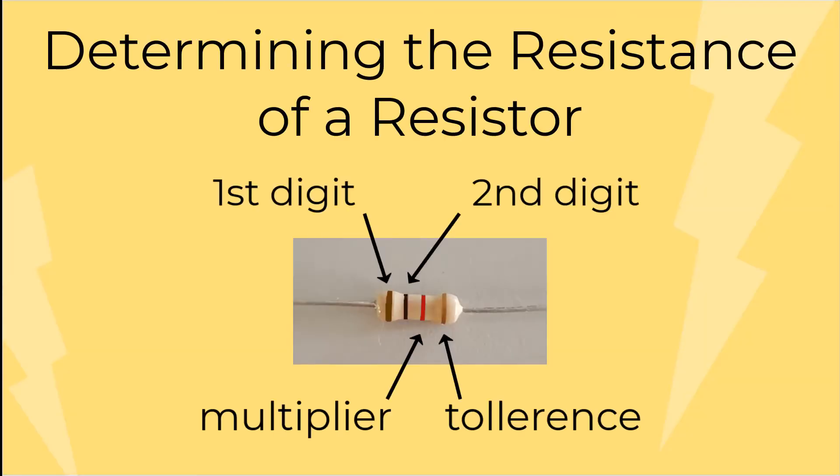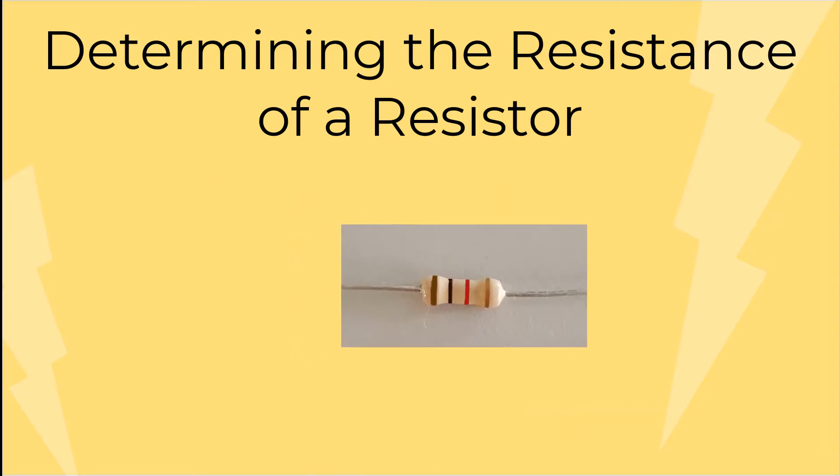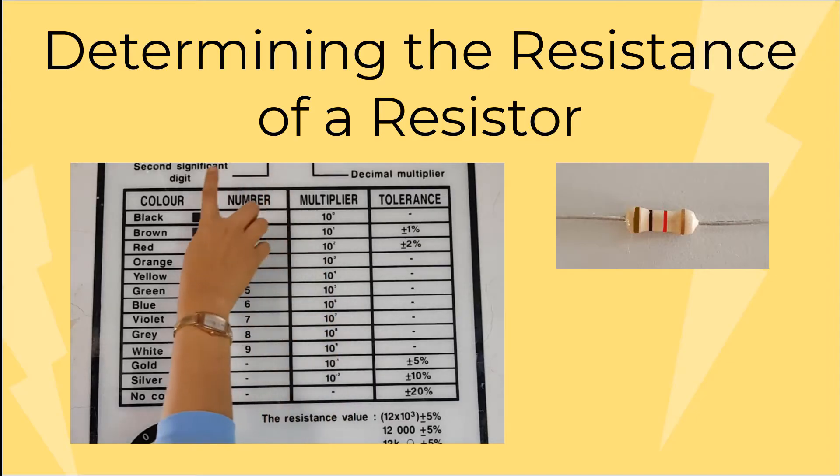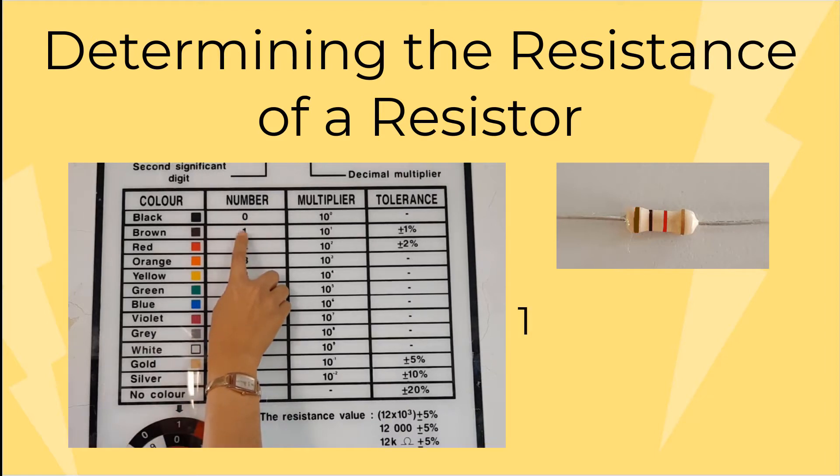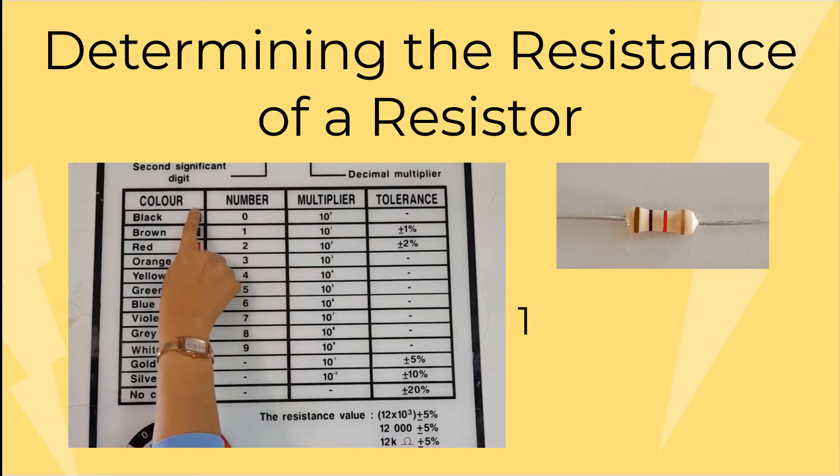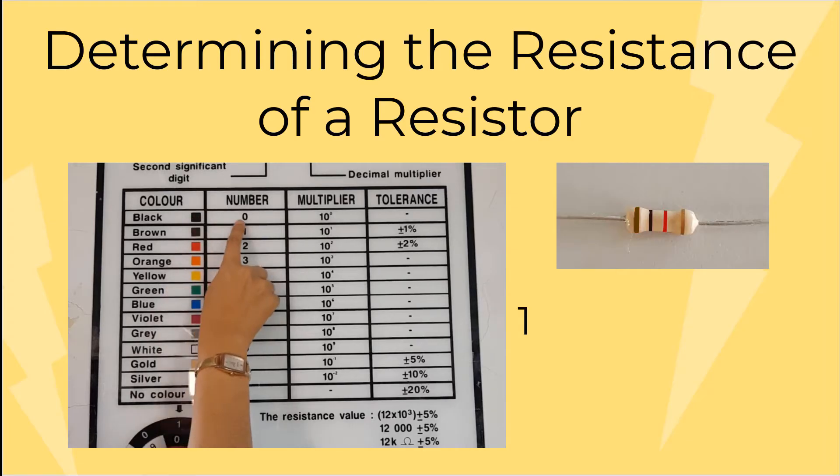Let's learn how to determine the resistance of a given resistor. There are four bands of colors in each resistor. The first band is the first digit. Here, the color is brown. From the chart, brown is 1 ohm. Next, the second band is the second digit. Here, the color is black. From the chart, black is 0.